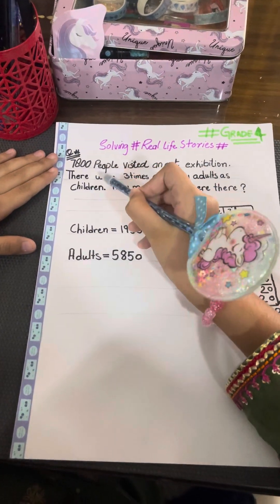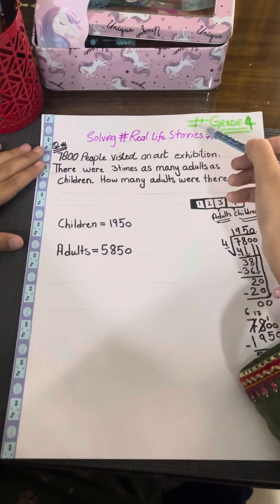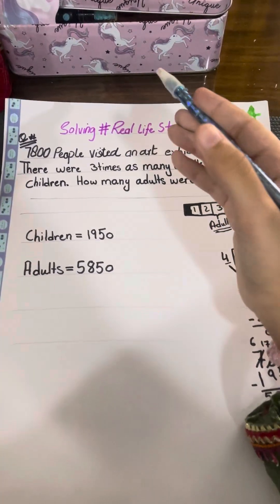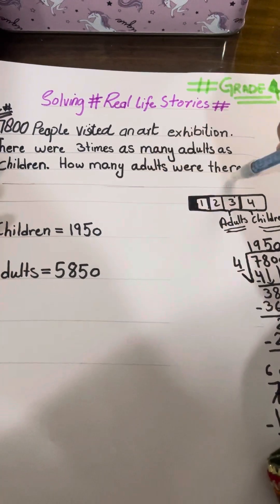Let's start. 7,800 people visited an art exhibition. There were three times as many adults as children. How many adults were there?